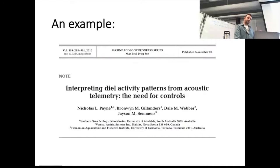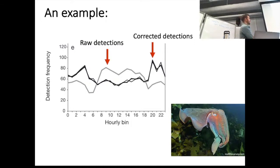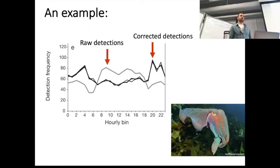The reason we need to control for this is really well illustrated by a paper led by Nick Payne in 2010 — I encourage you all to check it out. They were tracking cuttlefish and looking at their use of nearshore areas. They put out some reference tags, and what they found was that the raw detections would have suggested the animals were using nearshore areas most during the day. But when they accounted for system performance, they were actually using nearshore areas more at night. This is an example where you could completely misinterpret the diel patterns of space use in an animal because of system performance.